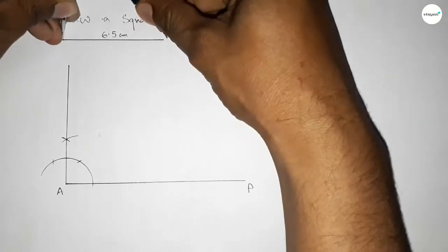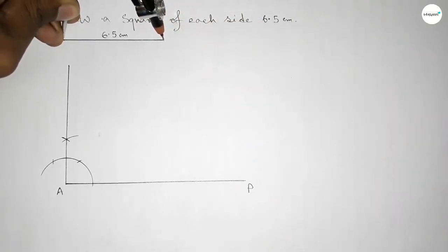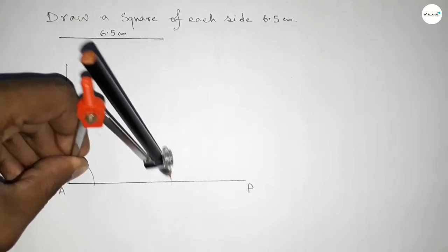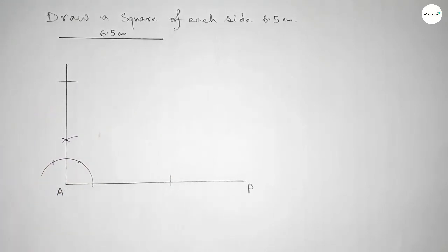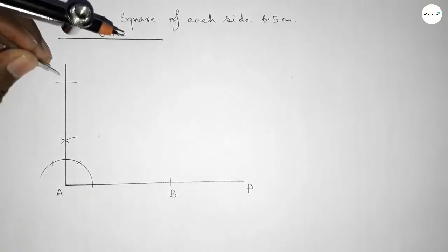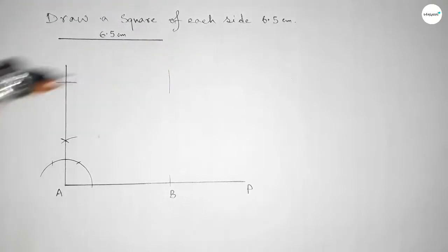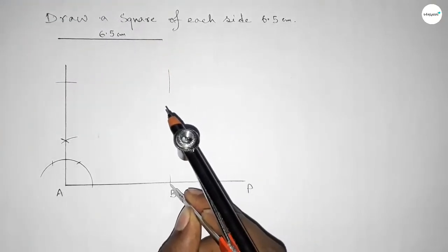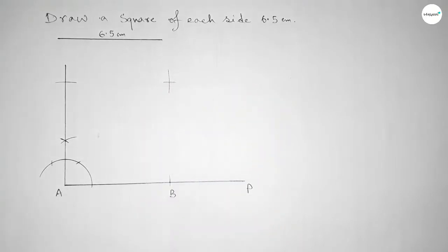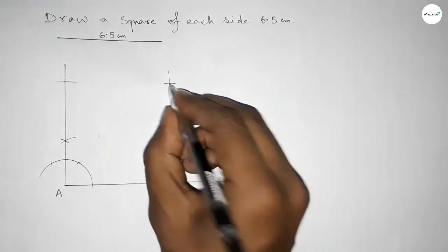Now take the length 6.5 centimeters using the compass. Putting the compass on point A, cut here and mark point B with the same length. Then place the compass and draw an arc of 6.5 centimeter length, cutting the arc so both curves intersect at a point.